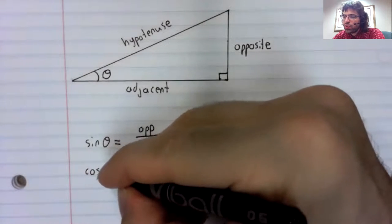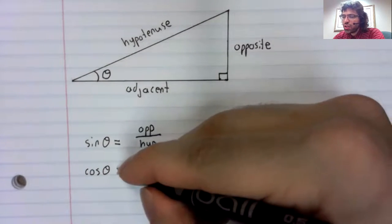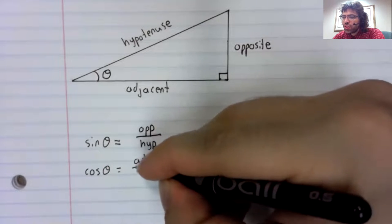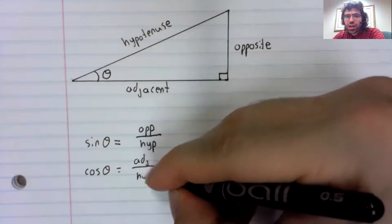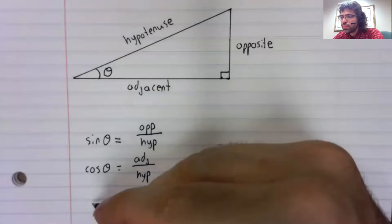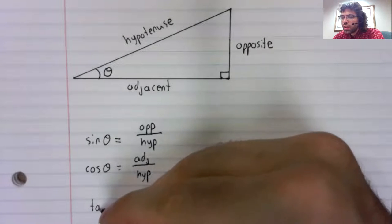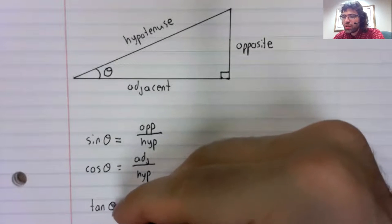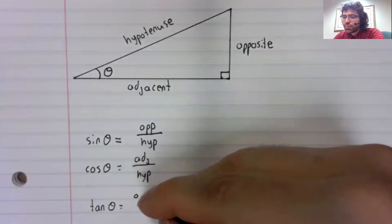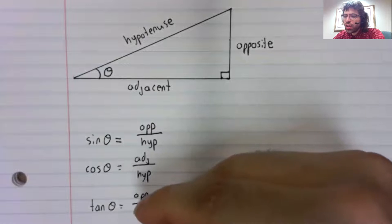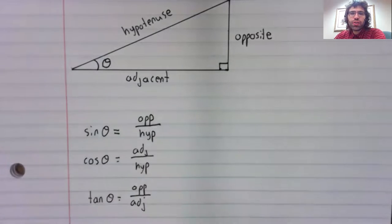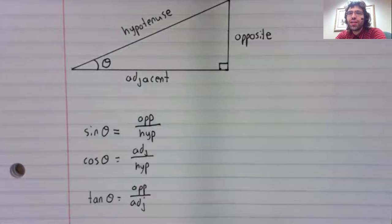The cosine of theta is the adjacent side over the hypotenuse, and the tangent of theta is the opposite side over the adjacent side.